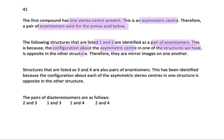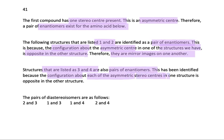Therefore, they are mirror images of one another. Structures that are listed as 3 and 4 are also pairs of enantiomers. This has been identified because the configuration about each of the asymmetric stereocenters in one structure is opposite in the other structure.